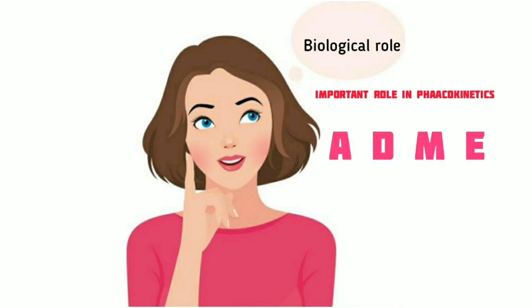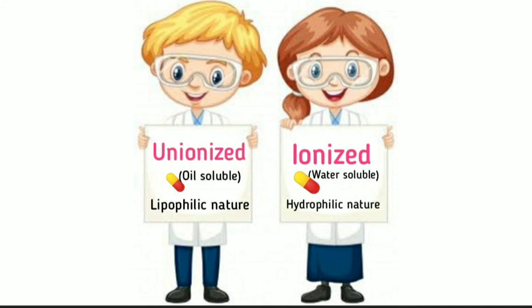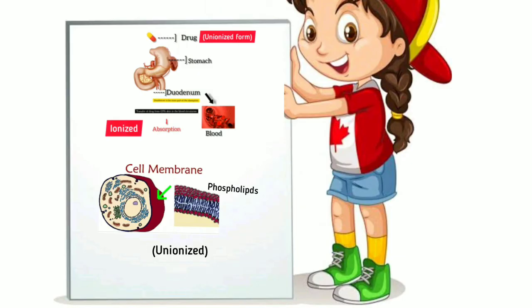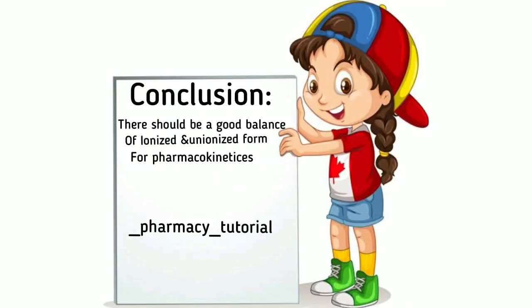The biological role of ionization is that it plays an important role in pharmacokinetics — the movement of drugs in the body — which involves ADME: absorption, distribution, metabolism, and excretion. Drugs exist as unionized and ionized forms. A unionized drug is lipophilic, meaning oil soluble, while an ionized drug is hydrophilic, meaning water soluble. Drugs taken orally are always in unionized form, then become ionized, and then unionized again. Therefore, a good balance of ionized and unionized drug is essential for pharmacokinetics.